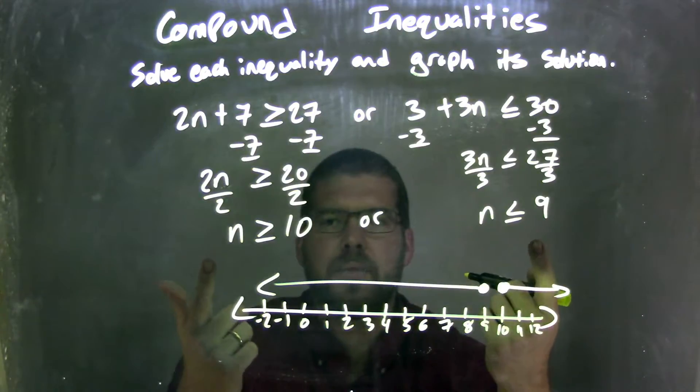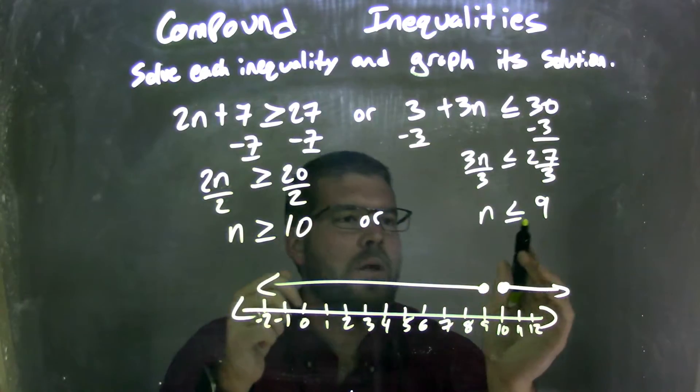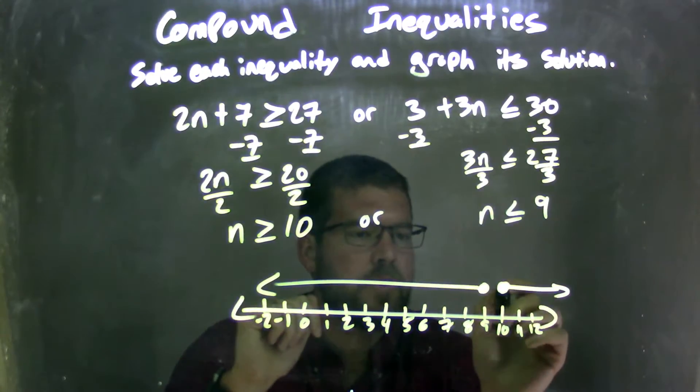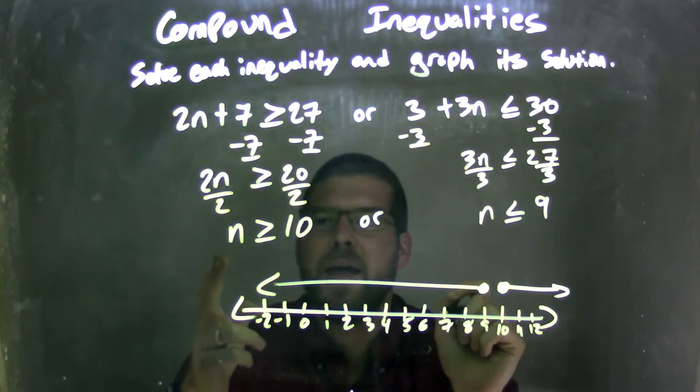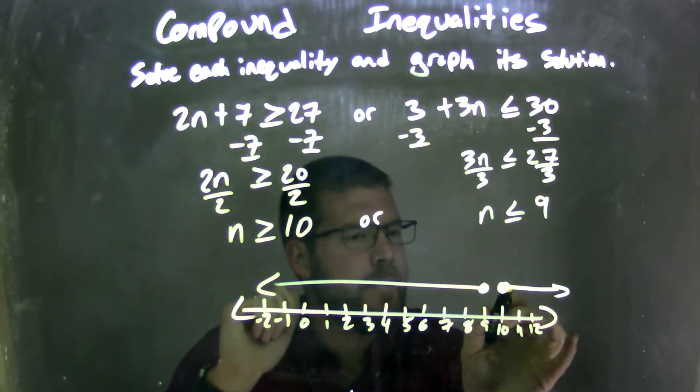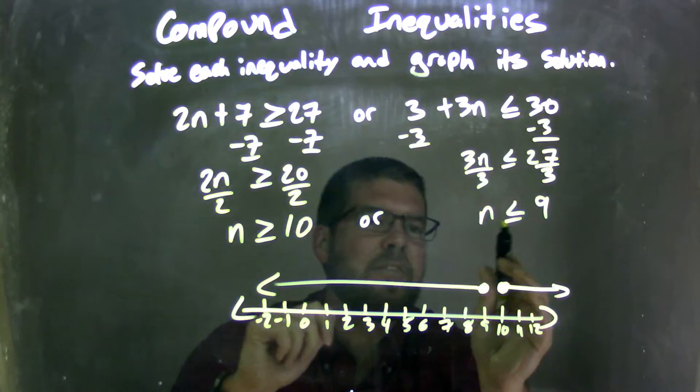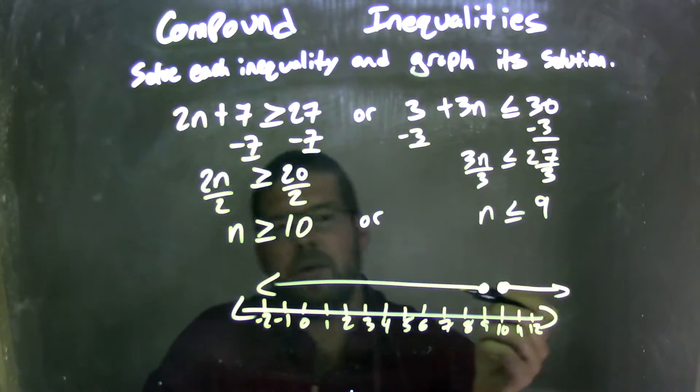I have my two parts now. Closed circle at 10, as well as 9, because it can equal both of them. So, closed circle at 10, closed circle there at 9. But n is also greater than 10, so from 10, I put my arrow to the right. And n is also less than 9, so I put my arrow to the left from 9.